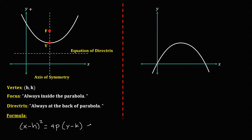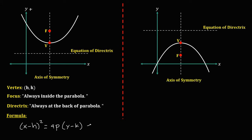If the parabola opens downward, the vertex is identified, the point inside the parabola is the focus, the line at the back is the equation of the directrix, and this line is the axis of symmetry. The formula is the same base form — x minus h, squared — but since it opens downward and is on the negative y-axis, it equals negative 4p times y minus k.